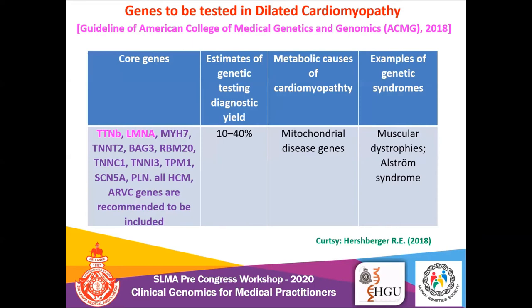At present, 60 genes are known to be associated with dilated cardiomyopathy. The slide shows a list of important genes recommended for testing in individuals suspected to have DCM, in accordance with the American College of Medical Genetics and Genomics guidelines. Among these genes, the two highlighted are most commonly associated.